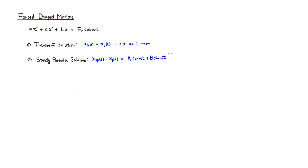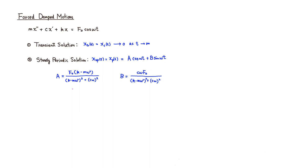We can plug this back into the differential equation to find A and B. Once you've done the substitution and solved for A and B, A = f₀(k − mω²) / [(k − mω²)² + (cω)²], and B has the same denominator with numerator cωf₀.